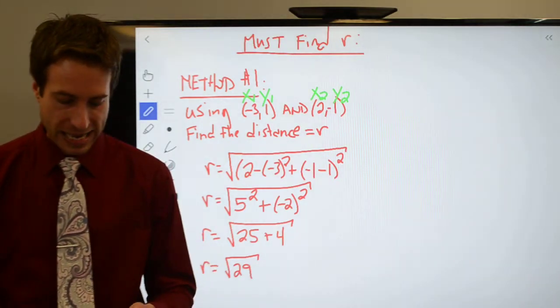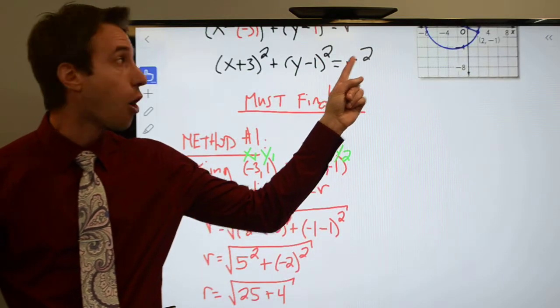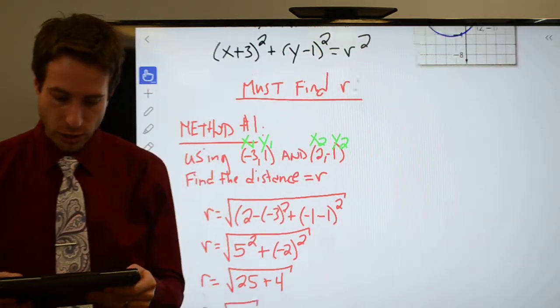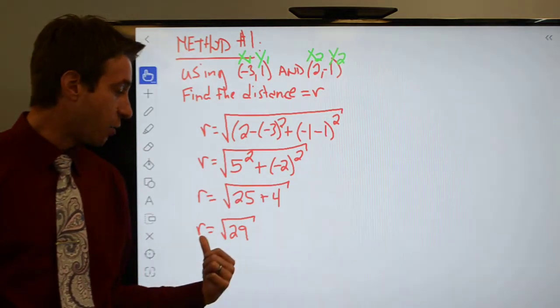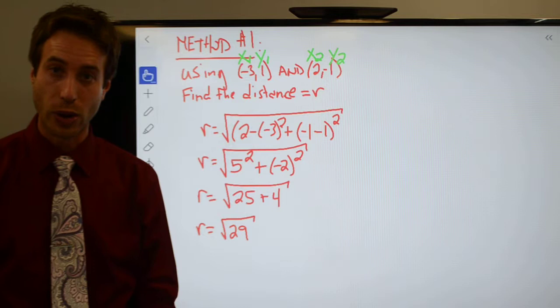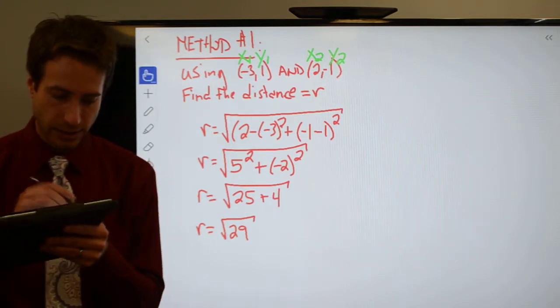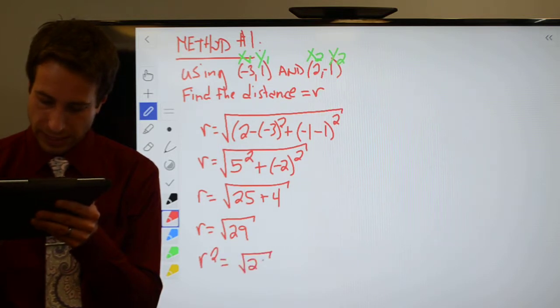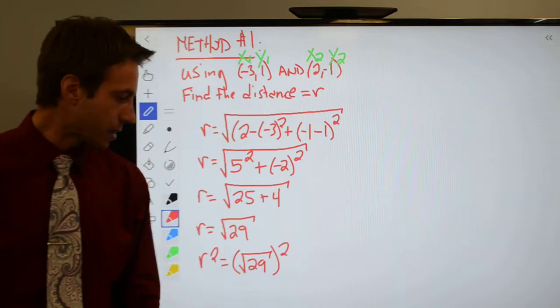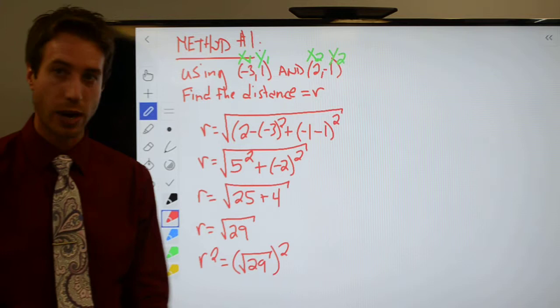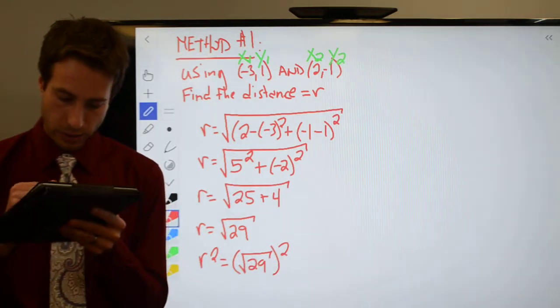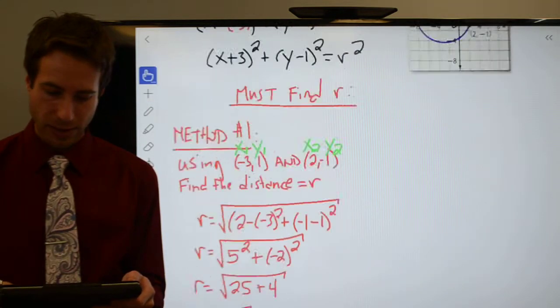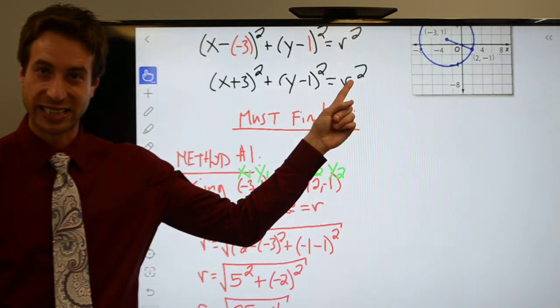Remember, up here in my equation, right, I need the value of r squared, not just r. Right, I need r squared. So here's what you're going to do down here, right? You found r. R is the square root of 29. How do you get r squared? Square both sides. So that means that r squared is equal to the square root of 29 squared. Well guys, this is going back a couple of chapters. What happens when you square a square root? They go away. Okay, so r squared is equal to 29. So all I got to do is back up here in my equation. I'll drop a 29 in right there for r squared.